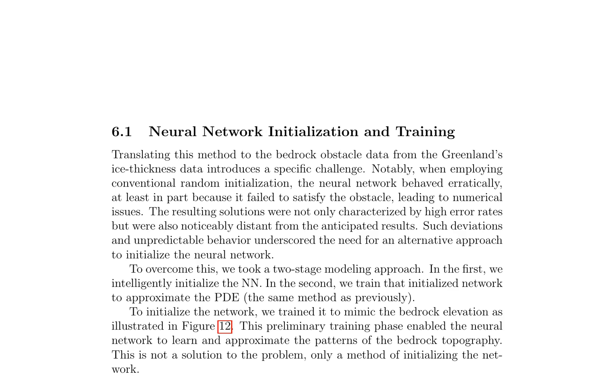The bedrock topography from the dataset is visualized in figure 12, serving as the obstacle function for subsequent analysis. When employing conventional random initialization, the neural network behaves erratically due to its failure to satisfy the obstacle constraint, leading to numerical issues. To overcome this, a two-stage modeling approach is taken. In the first stage, the neural network is intelligently initialized by training it to mimic the bedrock elevation as illustrated in figure 12, enabling it to learn and approximate the patterns of the bedrock topography. This is not a solution to the problem, only a method of initializing the network.